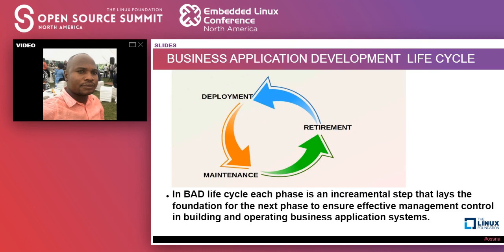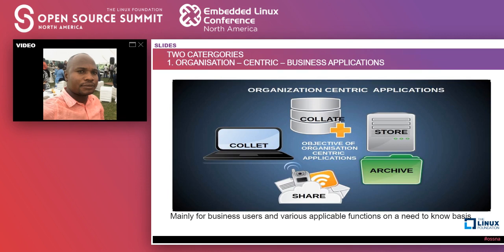Then we go on to the Business Application Development Life Cycle — we can call it BADLC. As you can see, it is a life cycle where each phase is an incremental step that lays the foundation for the next one, to ensure effective management and control. We deploy an application, do some maintenance, retire that application, and the process keeps repeating itself. The software produced after following this process will be a better version of the previous one.